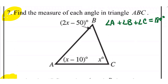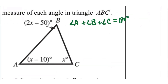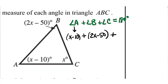So how does that translate into an equation that we can solve? Angle A is x minus 10, plus angle B is 2x minus 50, plus angle C is just x. And they add up to 180.